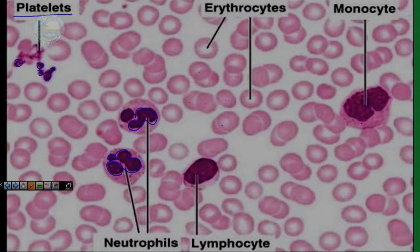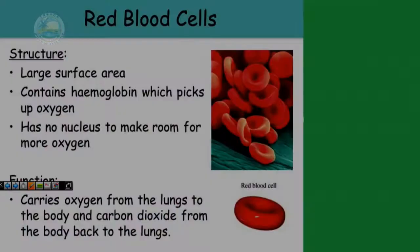This is a typical blood smear and you may see possible questions asking you to identify different types of blood cells in your blood smear. So let us focus on red blood cells really quickly. Your red blood cells have a large surface area to volume ratio. They contain a substance called hemoglobin.